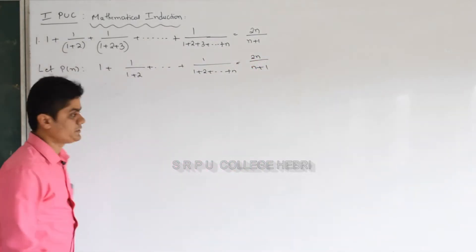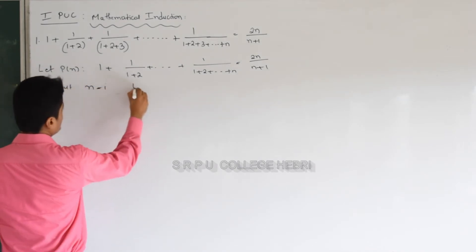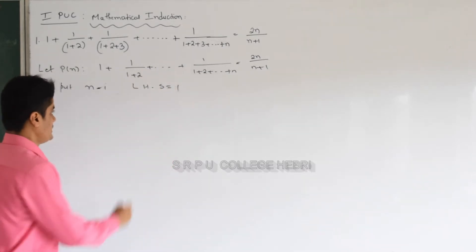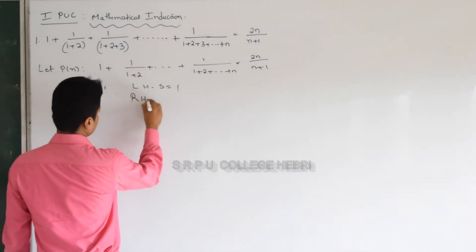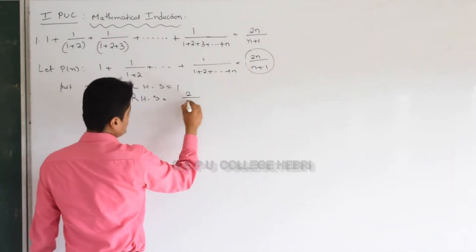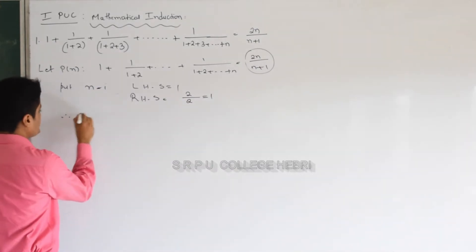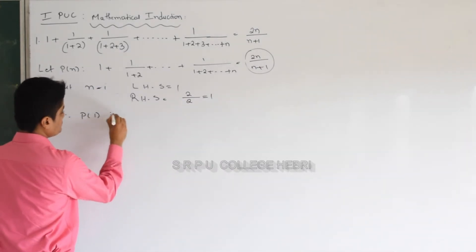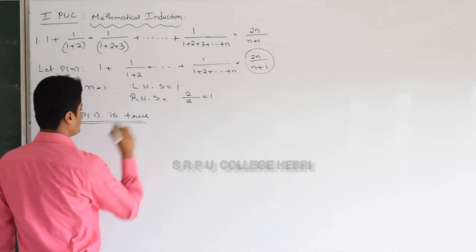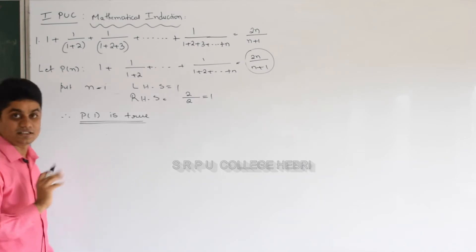Now verify the result for n equal to 1. Put n equal to 1. LHS is always the first term, which is equal to 1 here. And what is RHS? Substitute in the expression and you will get 2 by 2, which is also equal to 1. So the conclusion is P of 1 is true. First step is over — we verified the result is true for n equal to 1.